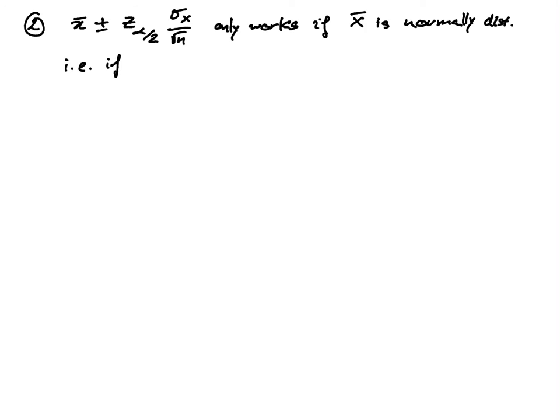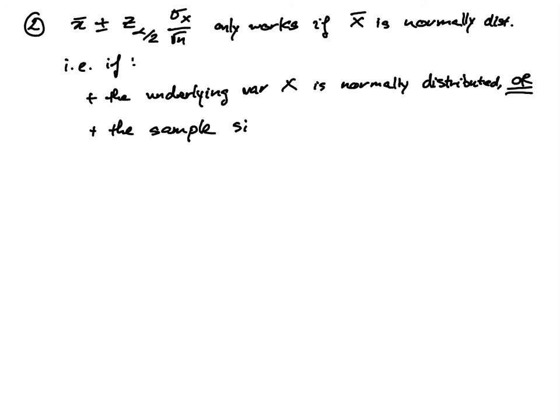In other words, it only works if the underlying variable is normally distributed, or if the sample size is greater than or equal to 30. So before you use this general formula, you want to make sure that either of these conditions is met.